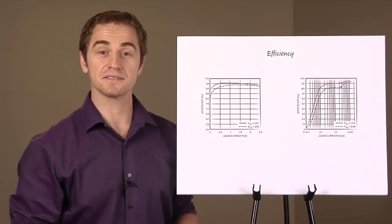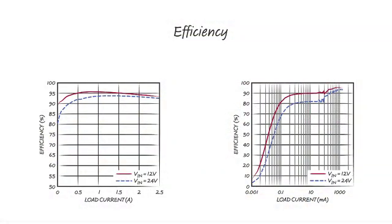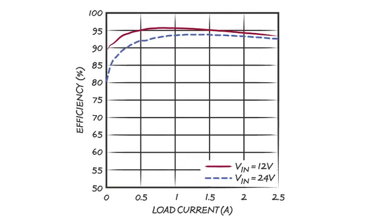Next, let's look at efficiency. On the left is a linear plot showing efficiencies at medium and higher currents. You can see here the peak efficiency for 12 volts to 5 volts application is very high at 96%.